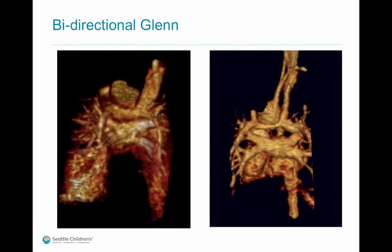Two different patients with bidirectional Glenns are shown. You can see the SVC anastomosis with the confluent pulmonary branches, and the Glenn anastomosis is widely patent.